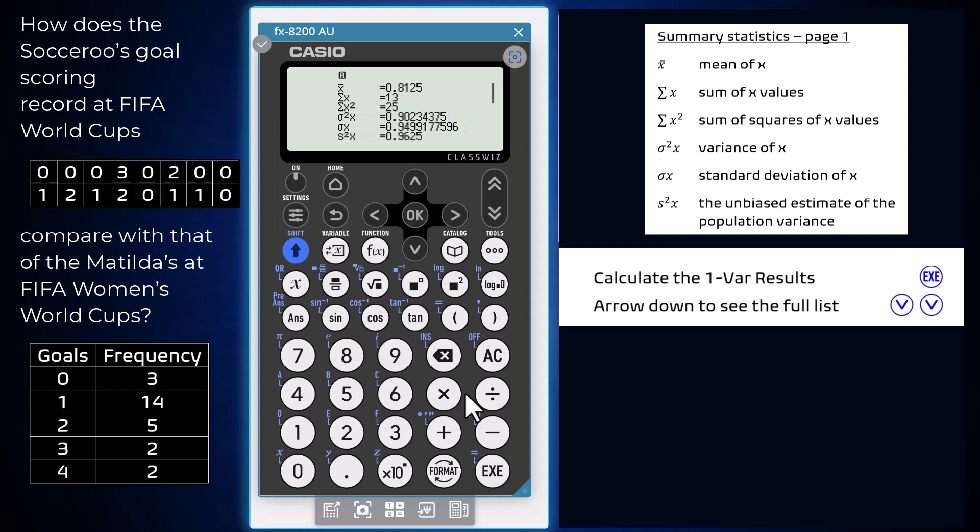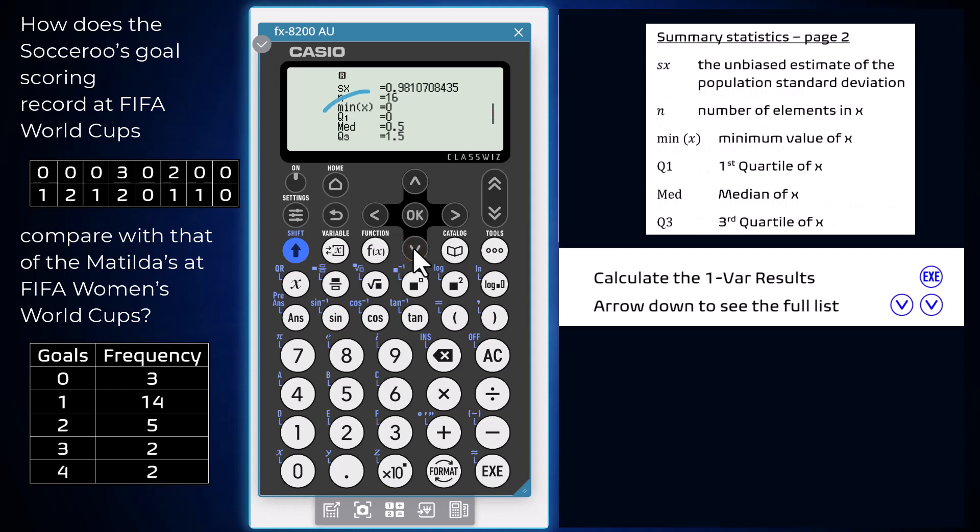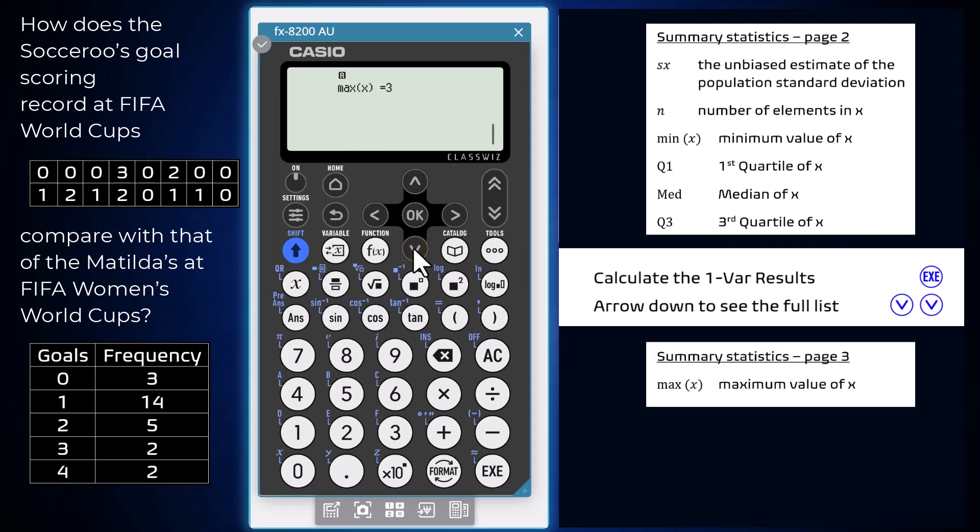By arrowing down, another page of summary statistics is shown. This includes the minimum, Q1 the first quartile, the median and Q3 the third quartile. To complete the five number summary, arrow down once more to see the data set's maximum.